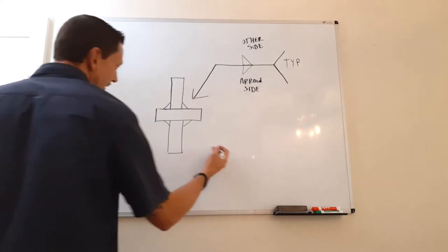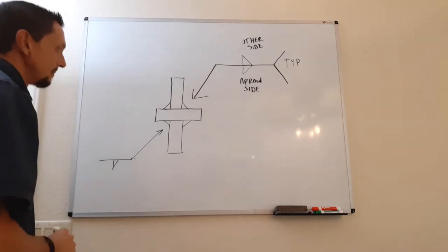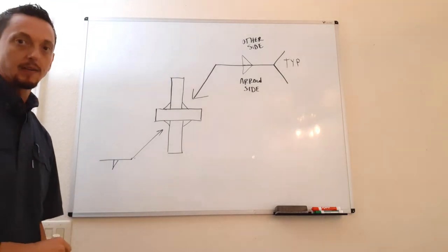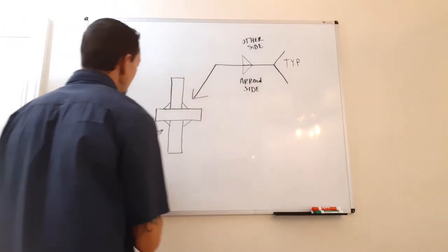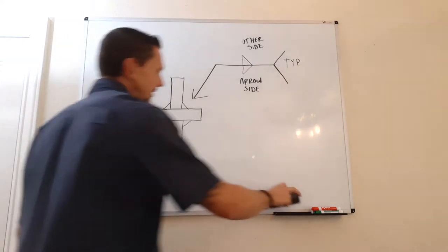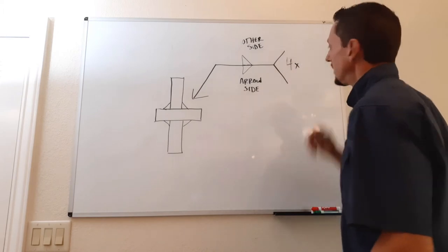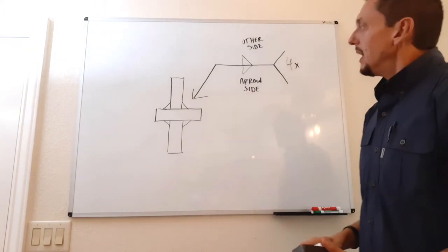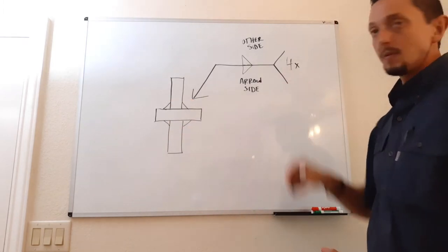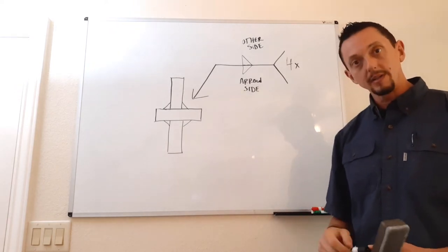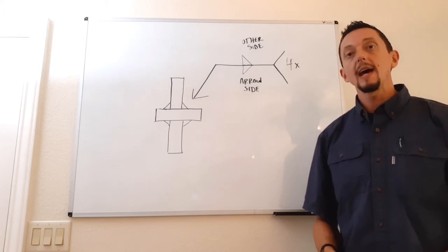A lot of times we will have two different weld call outs if they're supposed to be different. I've also seen where instead of 'typical' it will say something like '4X', meaning there are four different instances where we're going to apply the same weld call out.